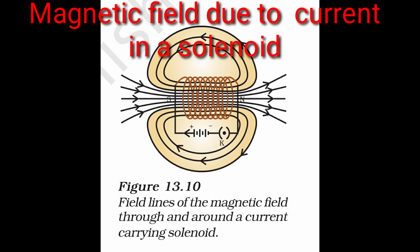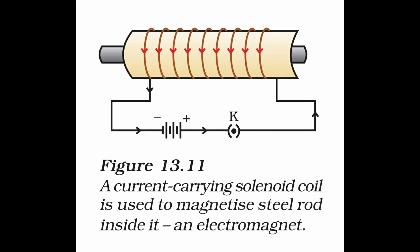Now we will discuss the magnetic field due to a current in a solenoid. A solenoid is a coil of many circular turns of insulated copper wire wrapped closely in the shape of a cylinder. One end behaves as a magnetic north pole and the other as a south pole. The field lines inside the solenoid are in the form of parallel straight lines, indicating that the magnetic field is the same at all points inside the solenoid.